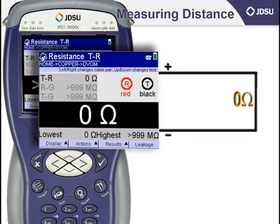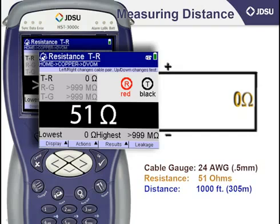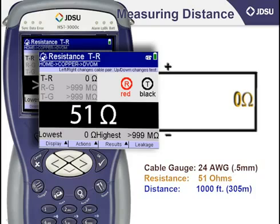Aside from just measuring and identifying the presence of a fault, there are a couple of other things you can do with a resistance meter. One of them is to determine the distance to a low resistance short. In this case, I have the tip wire twisted together with the ring wire at the far end and an extremely low resistance approaching zero ohms. If I knew the gauge of the cable and I took an ohm reading, I could convert the ohm reading into distance. In this case, my meter is reading 51 ohms of resistance. I know that the cable gauge is 24 gauge or 0.5 millimeter. So if I do the math, that equates to 1000 feet or about 305 meters of loop resistance, or the distance between the meter and the short. This is a very accurate measurement that is often used for pair qualification.